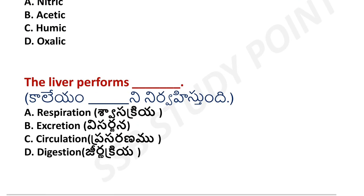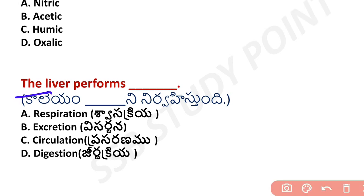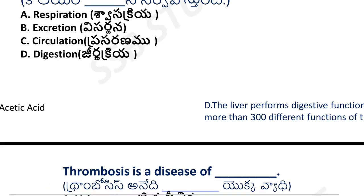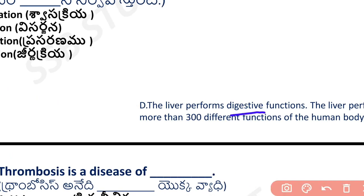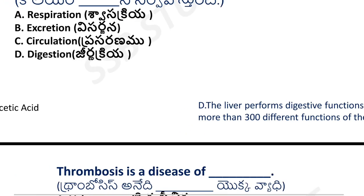Next question: what does the liver perform? The options include respiration, excretion, circulation, and digestion. The liver is associated with digestion. The liver performs more than 300 different functions in the human body, carrying out many different activities.